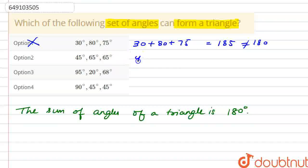Similarly, we have to check option two, which is 45 plus 65 plus 65. Here 65 plus 65 is 130, and 130 plus 45 is 175, which is not equal to 180.